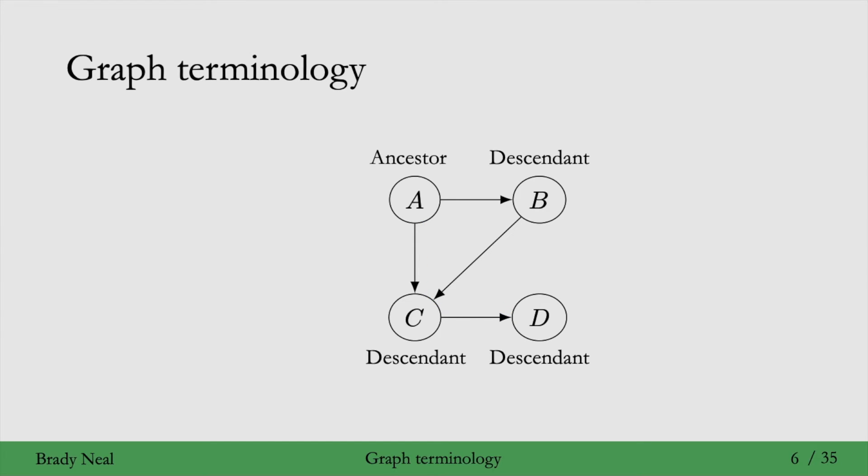And more ancestor terminology. So if A is the ancestor that we're interested in, all of its descendants are nodes that can be reached from A in directed path. So B can be reached from A if you just follow the A to B edge. Similarly with D if you follow the A to C and then C to D edge. So all of those are descendants of A.